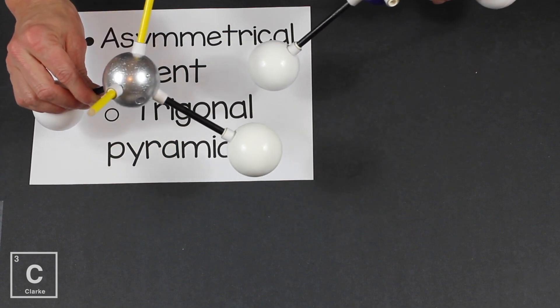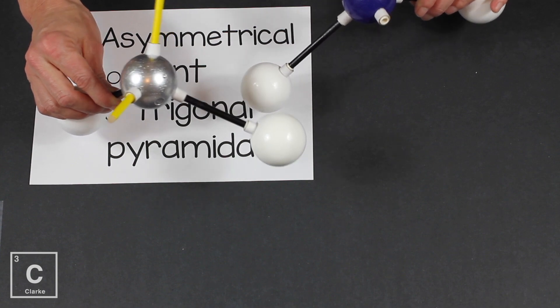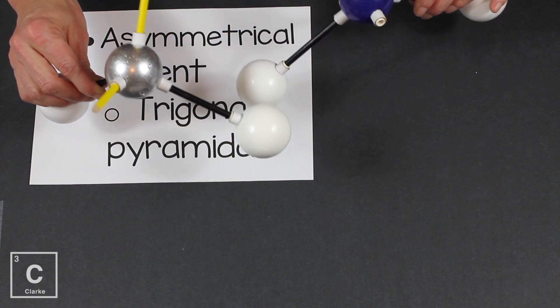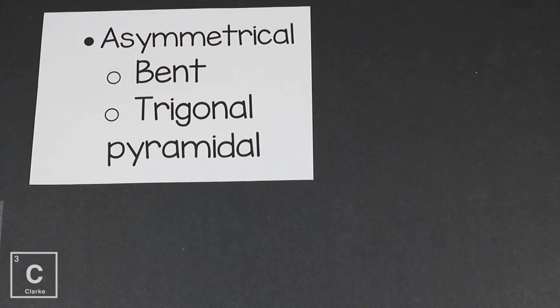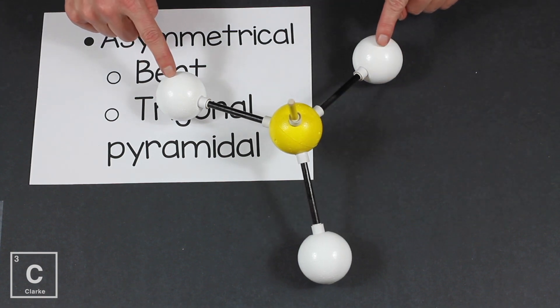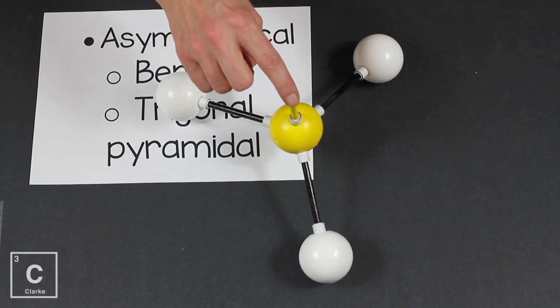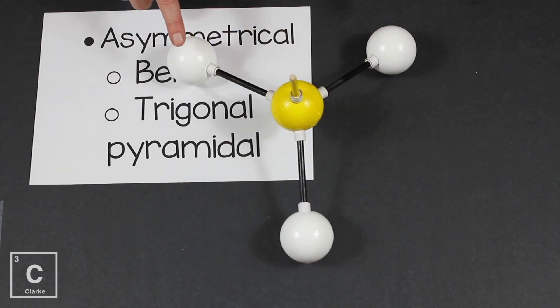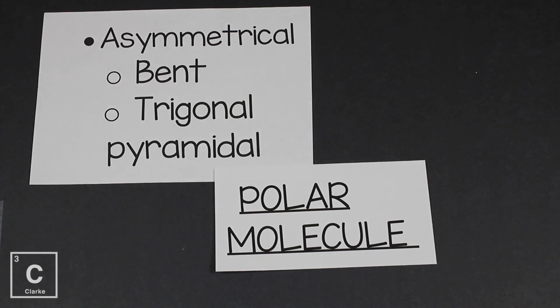And you know what? There's lone pairs on the central atom. No lone pairs, nonpolar. Lone pairs, polar. Let's look at trigonal pyramidal. Oh dang, look at that, lone pair. Lone pair, polar. If we've got these three atoms playing tug-of-war, they're all pulling in a downward motion, there's no one up here to cancel that out. Someone's winning tug-of-war. When you win tug-of-war, polar molecule.